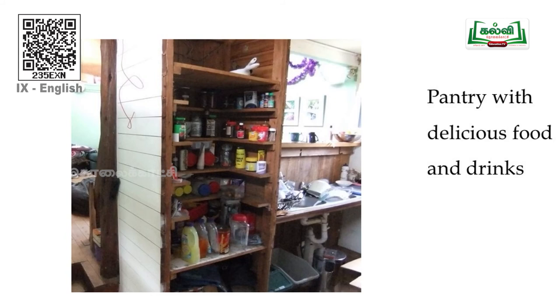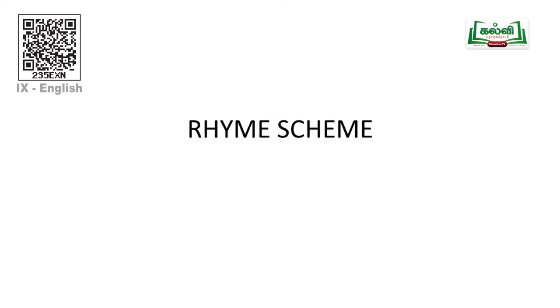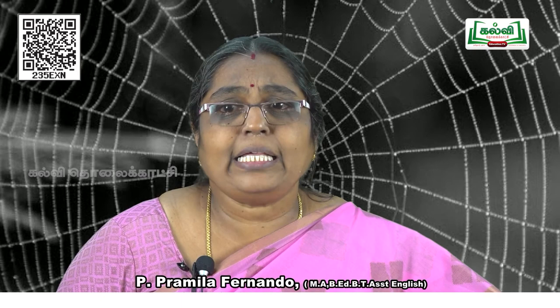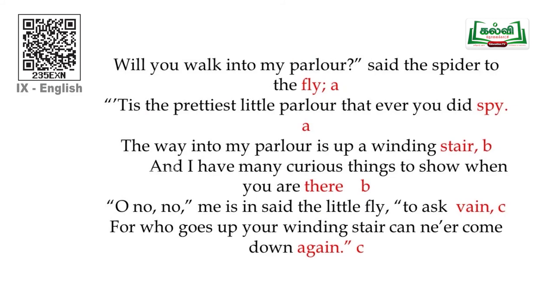Now we will see the rhyme scheme. Children, already you have learnt about rhyming words. We are going to see the rhyme scheme of the first stanza. The last word of the first line is 'fly' — so you mark it A. Come to the next line; the last word is 'spy.' See, it is rhyming with 'fly,' so you mark the same A. Now come to the third line; the last word is 'stair' — not rhyming with 'fly' or 'spy,' so mark it B.